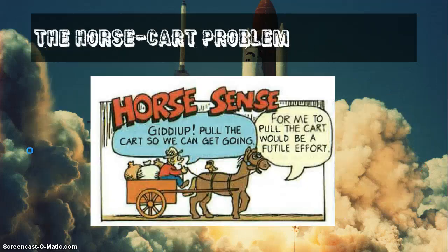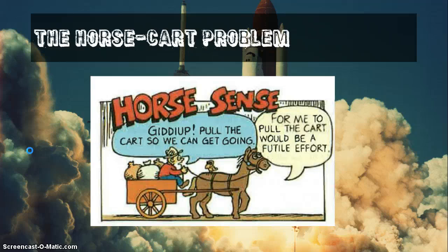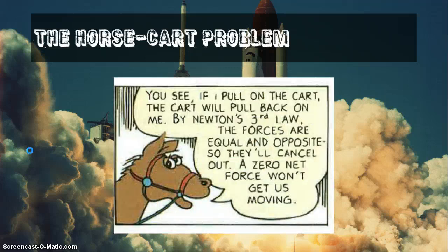So let's go ahead and further look at this with this example here. Just kind of setting you straight on Newton's third law. We have a horse and a farmer who wants the horse to carry him and his cart. The farmer is saying, Giddyup, pull the cart so we can get going. And then the horse is resisting, saying, well, for me to pull the cart would be a futile effort. Because, you see, if I pull on the cart, the cart will pull back on me. By Newton's third law, the forces are equal and opposite, so they'll cancel out.